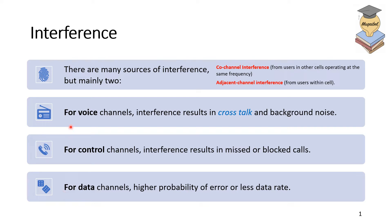When it comes to the impact of interference, we have three scenarios. For voice channels, interference results in crosstalk — voices interfere with each other — and background noise. For control channels, interference results in missed or blocked calls, which has a higher impact. For data, interference impacts the probability of error, resulting in a lower data rate. Interference is something you want to reduce.